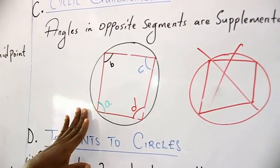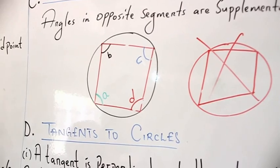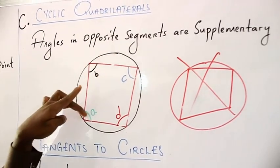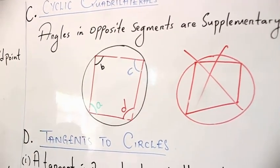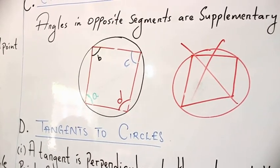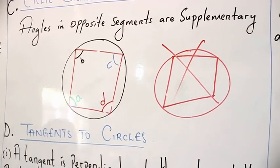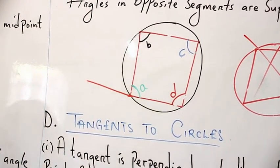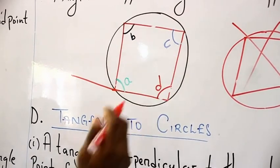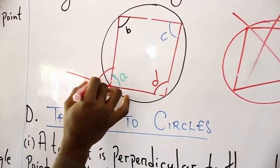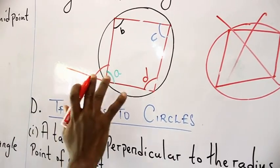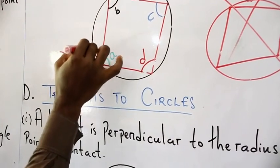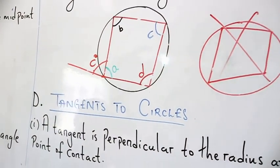Regarding cyclic quadrilaterals, we need to know that the sum of opposite angles gives 180 degrees — that is, opposite angles are supplementary. Also, the exterior angle at any vertex of a cyclic quadrilateral is always equal to the value of the opposite interior angle. So if the interior angle is c degrees, the exterior angle at that vertex is also c degrees.